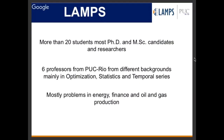LAMPS is a laboratory at PUC-Rio. We now have more than 20 students — PhD, master's students, and researchers — along with many professors from different backgrounds: optimization, statistics, and time series. Most of the problems we work on are in energy, but we also have some problems in finance and oil and gas production.